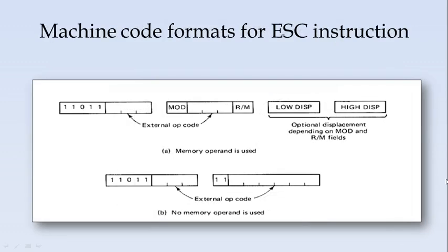Now the machine code formats for the escape instruction. After the escape instruction the coprocessor is activated. If a memory operand is used, the instruction will have two bytes. In the first byte, the most significant five bits — 1 1 0 1 1 — indicate it is an instruction for the coprocessor. The first byte also has three more opcode bits, and the second byte has three bits, giving a total of six bits, meaning 2^6 = 64 different operations can be performed using the opcode.